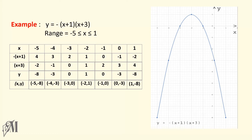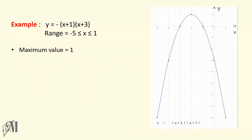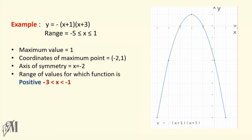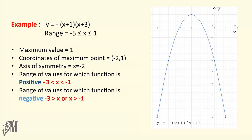The plotted graph will look like this. When we look at the features, the maximum value is 1, where it turns at the point (minus 2, 1). The function is positive when x lies between minus 3 and minus 1, and it is negative when x is greater than minus 1 and when x is less than minus 3. The roots of the function are minus 3 and minus 1.